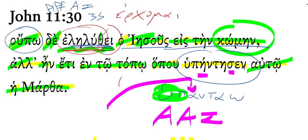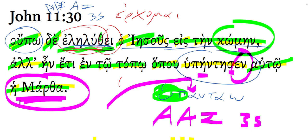That's going to be an aorist active indicative. This is a third-person singular ending because Martha, third-person singular, she is the subject. She met him.